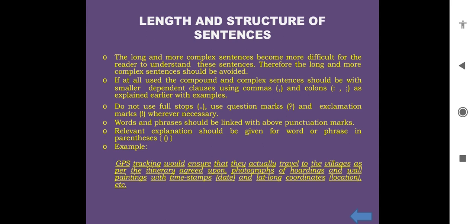Length and structure of sentences: Here again, it is emphasized to avoid long and complex sentences. If used at all, for compound and complex sentences, use smaller dependent clauses using commas and colons as explained earlier. We should not use full stops all the time. Use question marks and exclamation marks wherever necessary. Words and phrases should be linked with proper punctuation marks. Relevant explanation should be given for a word or phrase in parenthesis. For example: GPS tracking would ensure that they actually travel to the villages as per the itinerary agreed upon, photographs of holdings and wall paintings with timestamps as date, and lat-long coordinates as location, etc.